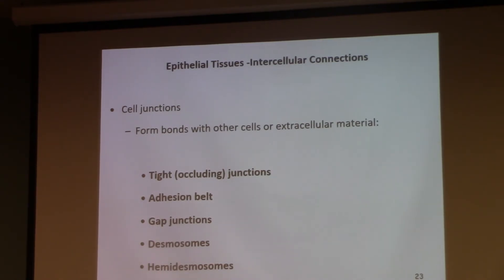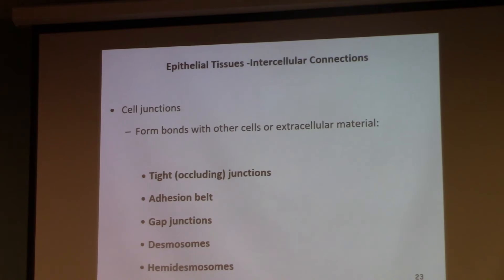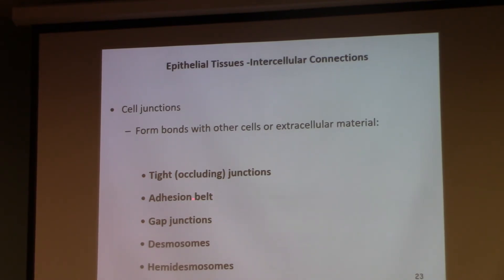Let's put this in common language. When you're talking to somebody else and working on your relationship, the counselor says you need to work on your interpersonal communication skills - communication from person to person. But when you meditate, you're doing introspection - looking within yourself, because intra means within. Now, just memorize the different types of intercellular connections: we're going to have tight junctions, adhesion belts, gap junctions, desmosomes, and hemidesmosomes. Just memorize the names first.